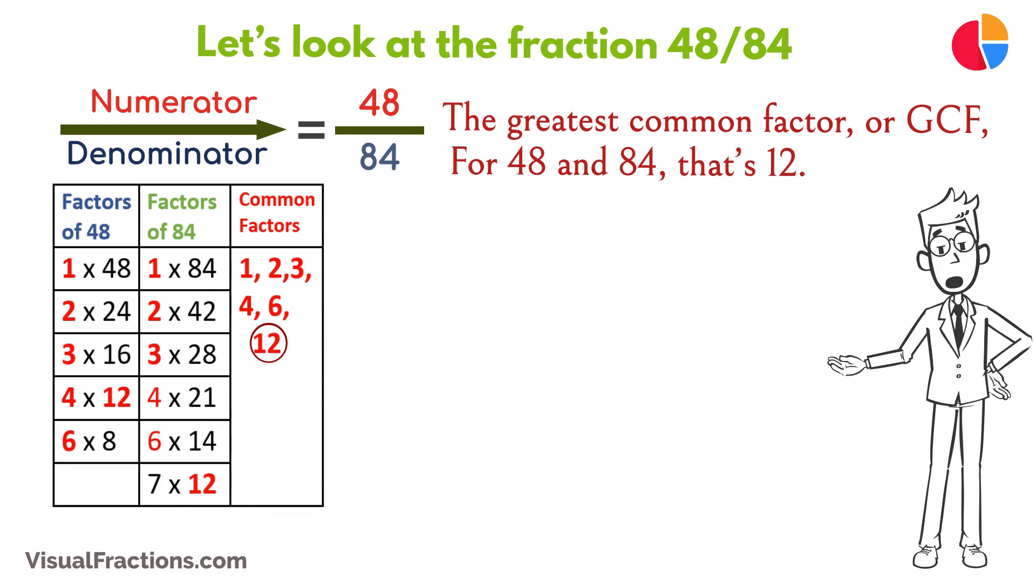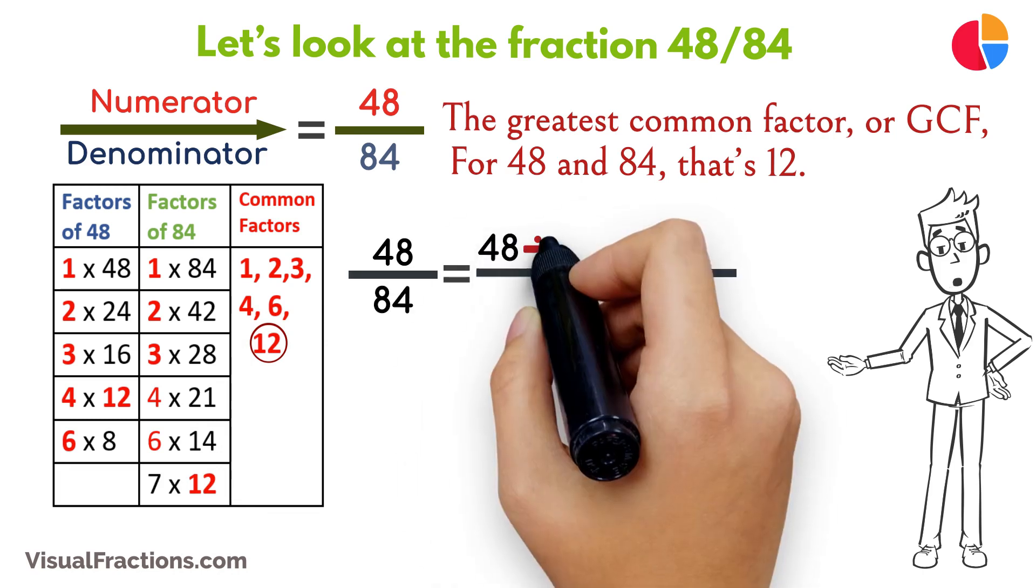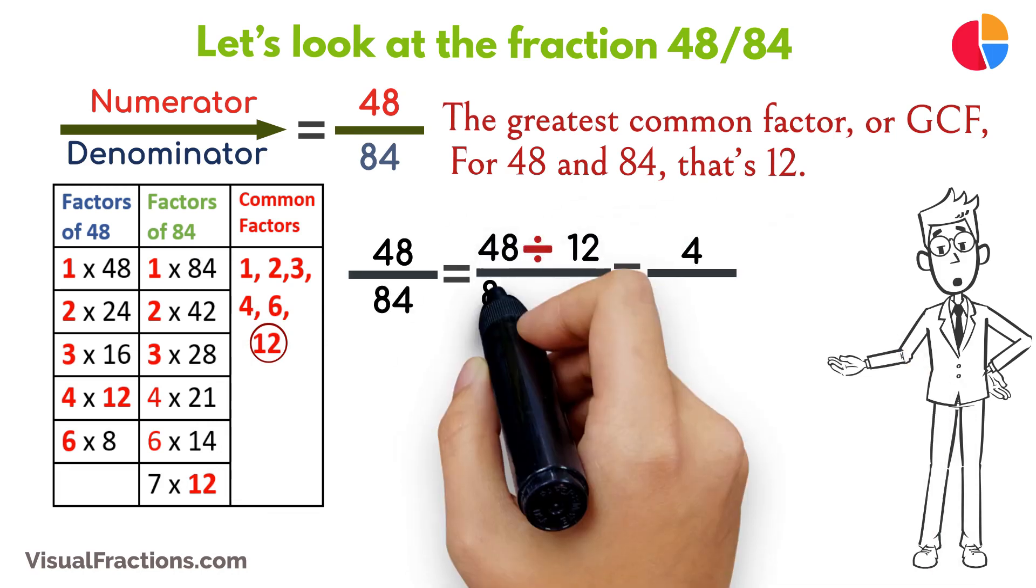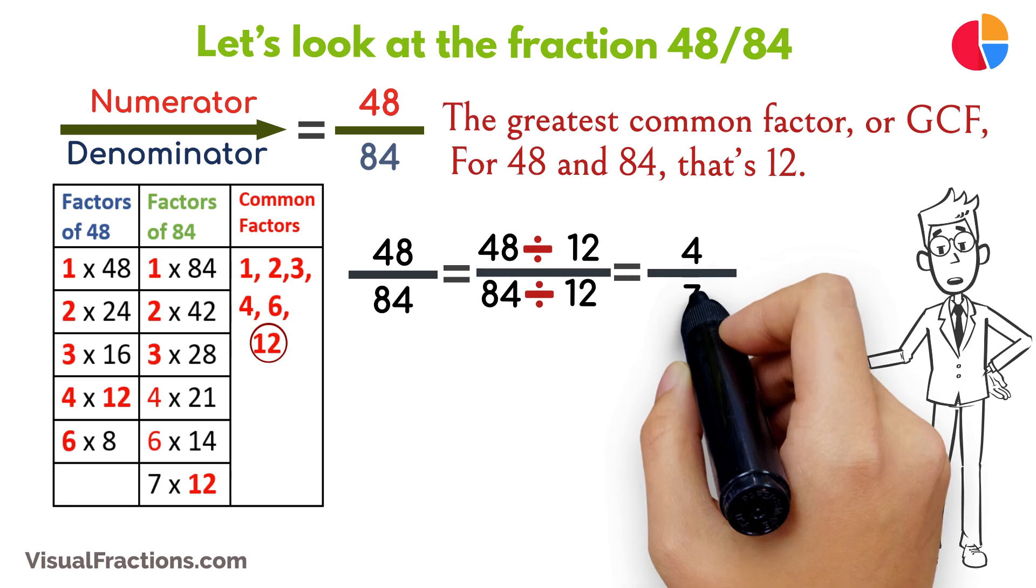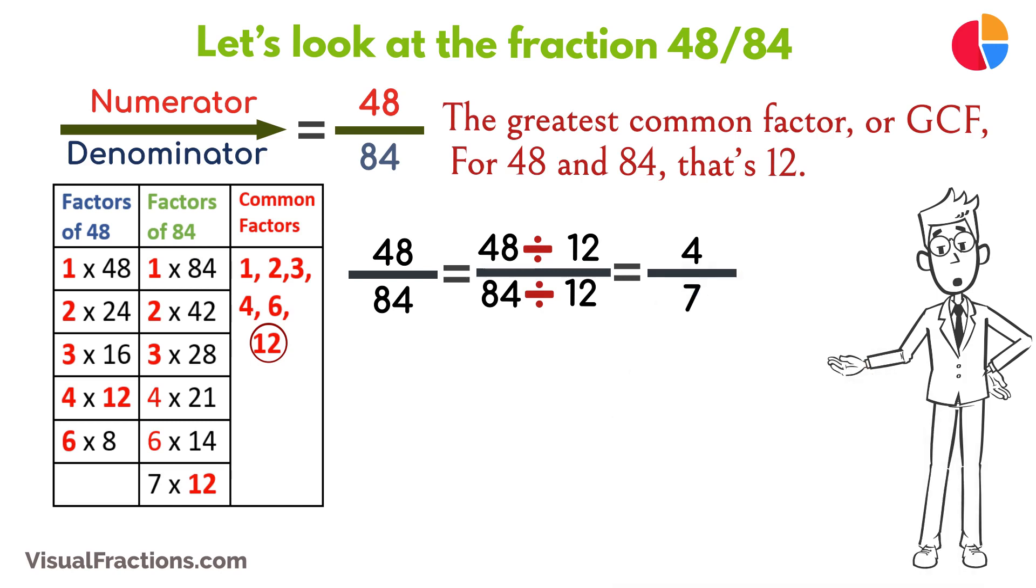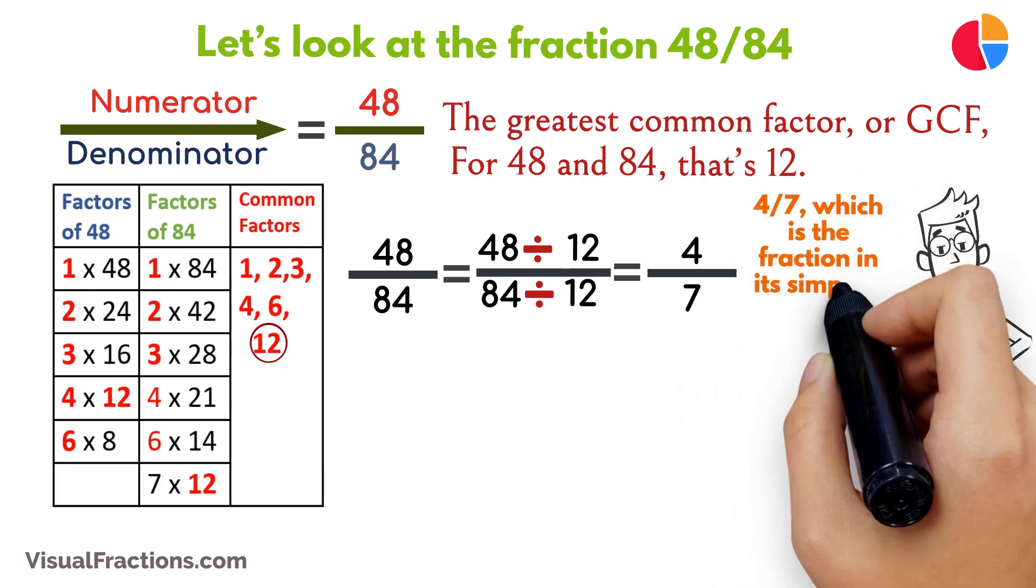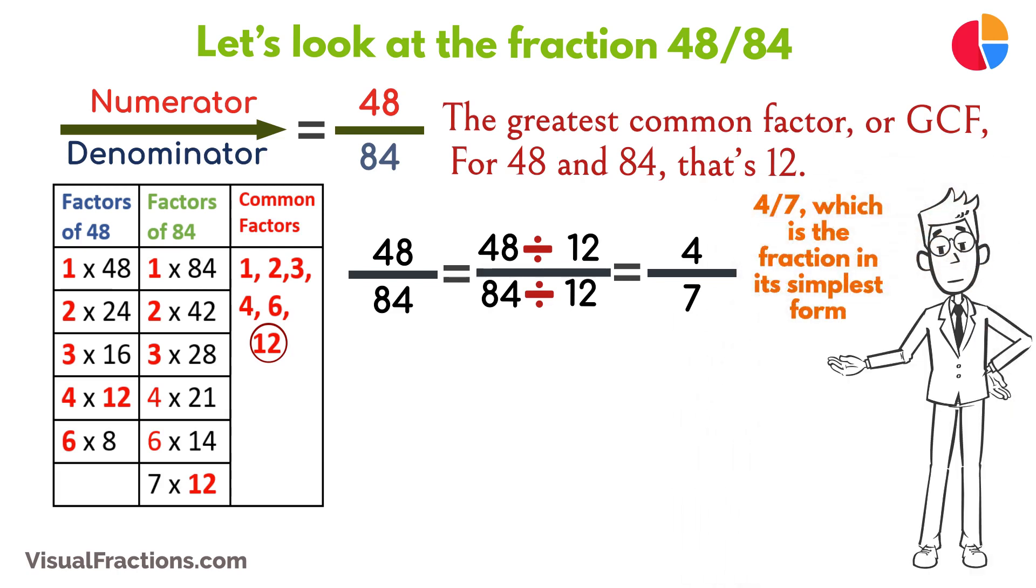We start by dividing 48 by 12, which gives us 4. Then we divide 84 by 12, which results in 7. So, simplifying 48/84, we end up with 4/7, which is the fraction in its simplest form and cannot be reduced any further.